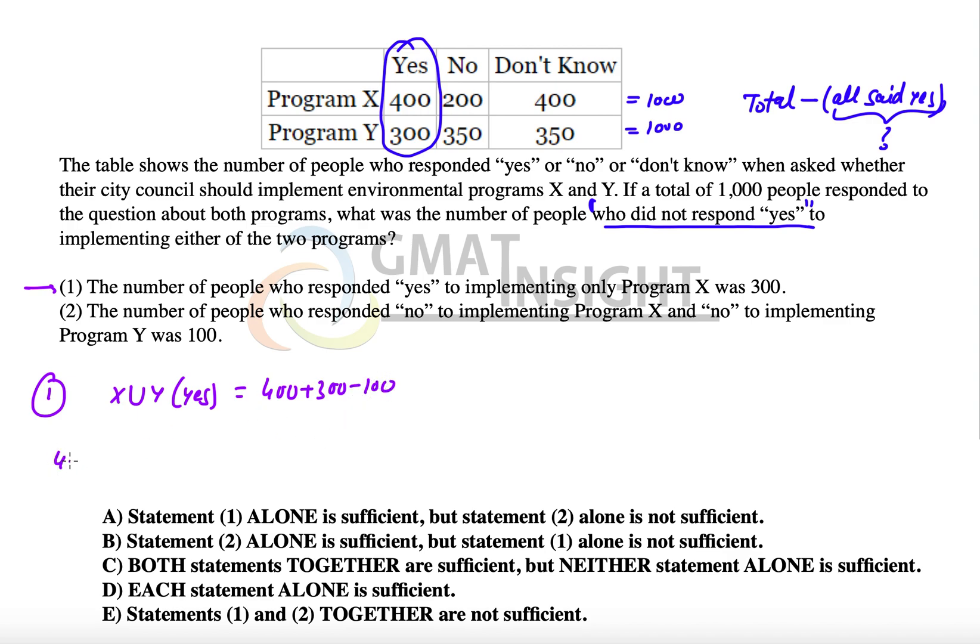That means X union Y for the answer yes will be equal to 400 plus 300 minus 100, because 100 is common. Where does that 100 come from? 400 minus 300, because 300 said yes to only X, meaning 100 people are common to yes for both X and Y. So the union equals 600.